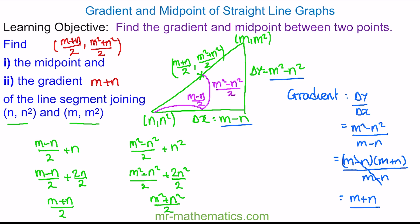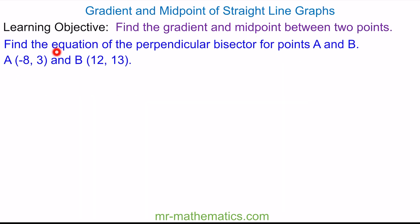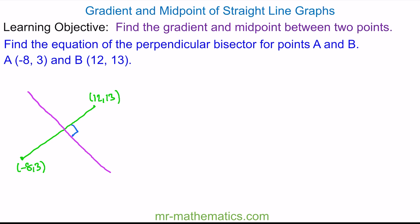Now we're going to try one more question which combines everything we've covered so far. We're going to work out the equation of a perpendicular bisector that passes between points A and B. We'll begin by sketching the line segment AB, and the perpendicular bisector will intersect at 90 degrees halfway along AB. We know the gradients between the two lines have a negative reciprocal of each other because they cross at right angles. So we'll find the gradient of the green line segment: the change in y is 10 and the change in x is 20, giving us a gradient of 1/2, which means the gradient of the pink line will be -2.